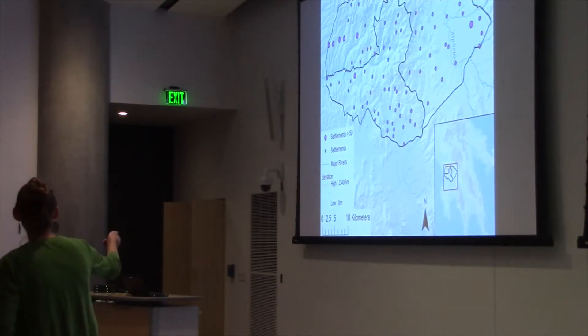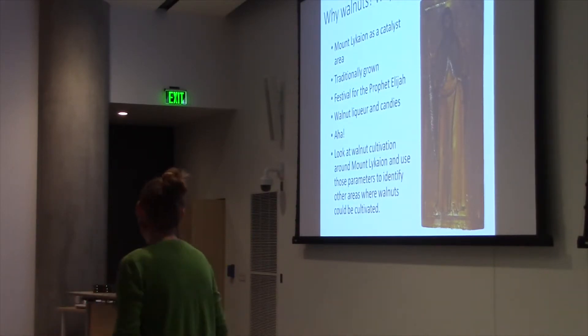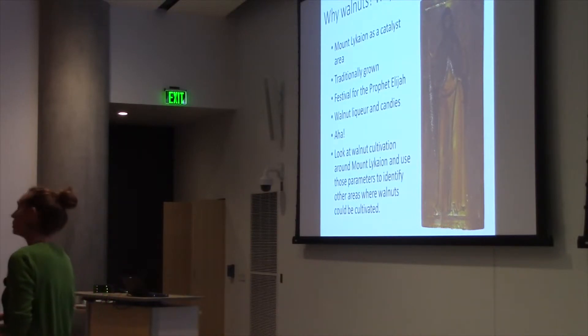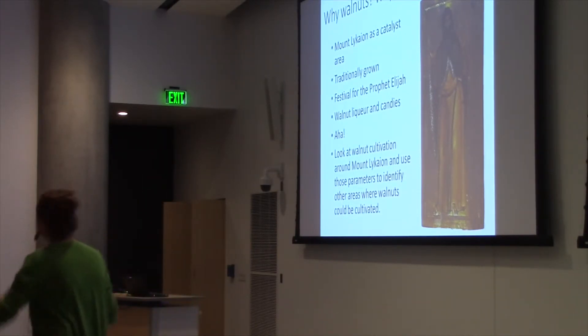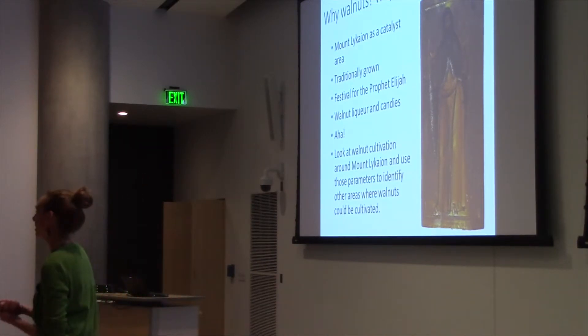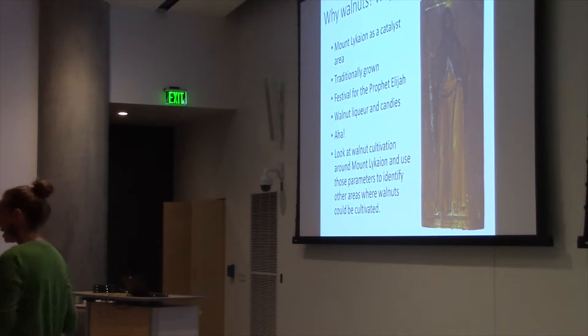How was I going to find a way to sort of encourage that while keeping those traditions alive? The answer of course, as you might have guessed, was walnuts. Like I said, Mount Lycaon is a catalyst area. Walnuts are grown on the slopes of Mount Lycaon. They're traditionally grown for at least three generations back. It turns out that at the festival of the Prophet Elijah, who you can see here, walnut liqueur and candies are served at the local gathering. There's probably not a religious reason for this. It probably just has to do with timing. But I thought, aha, here's a way that we can provide the people living around Mount Lycaon with an economic opportunity that draws on their local traditions rather than changes them in any way.